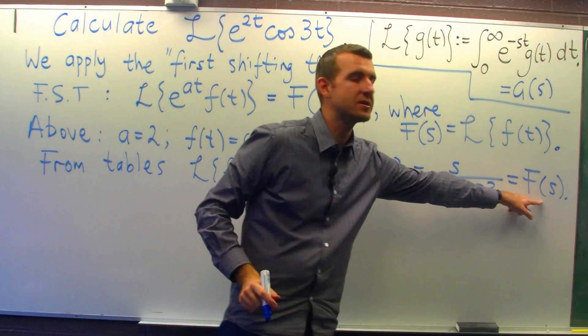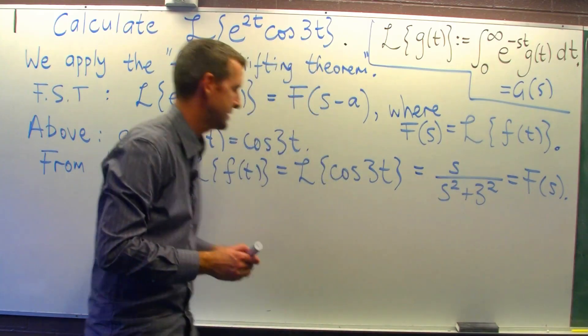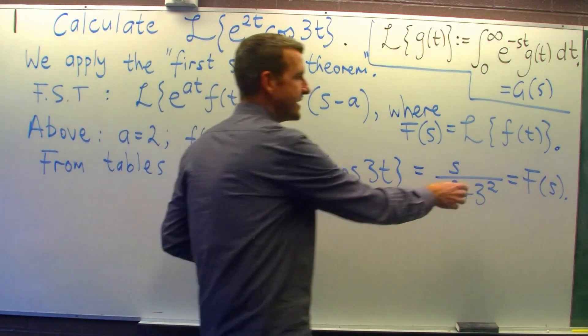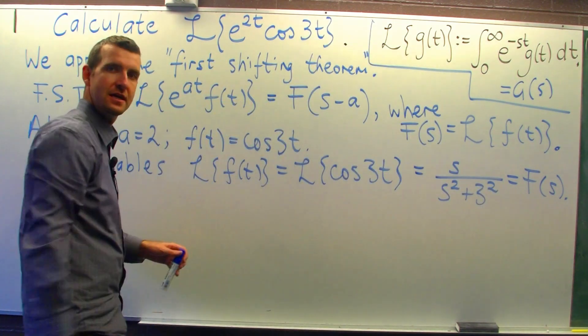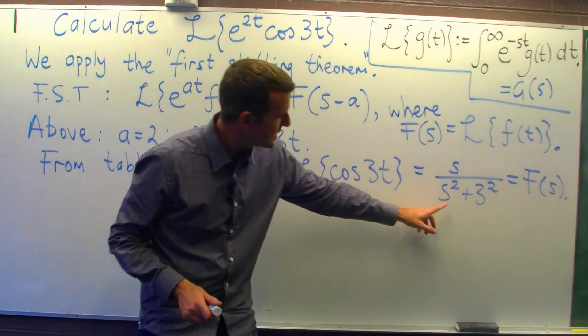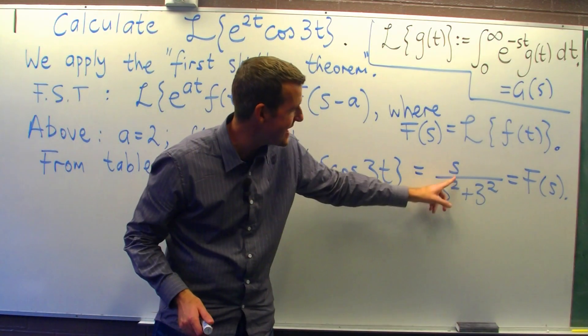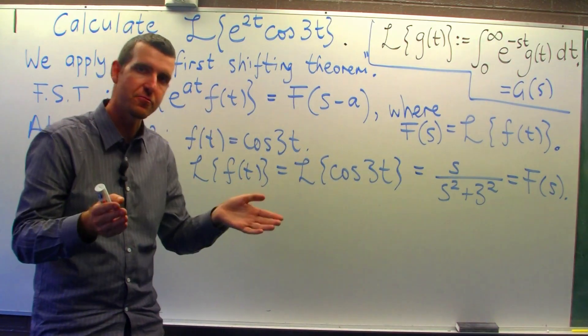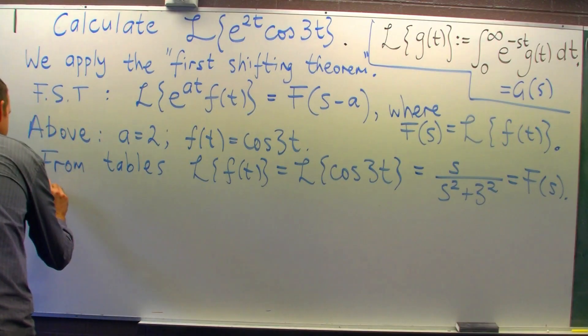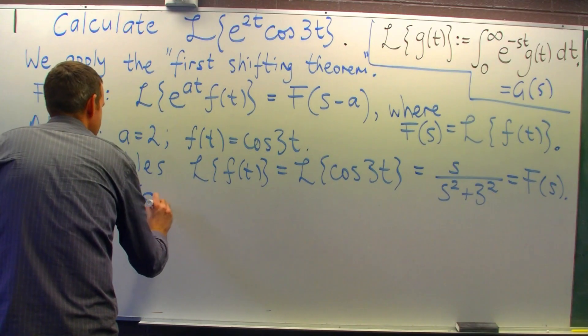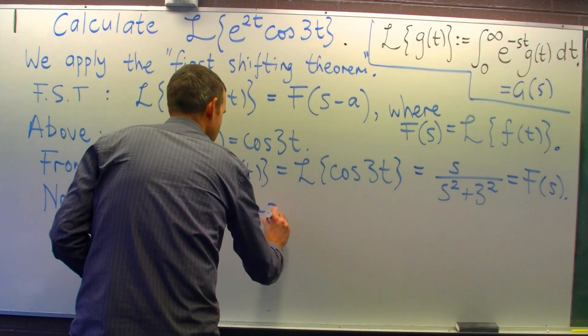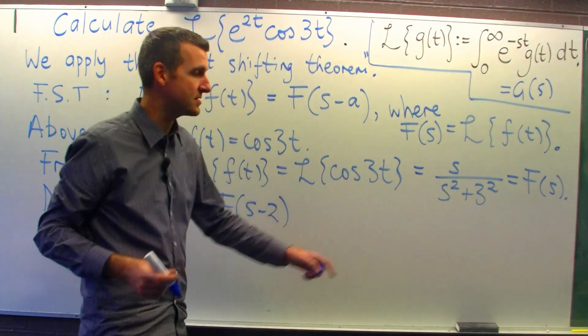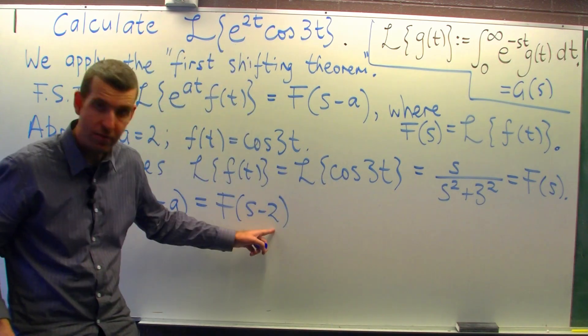Now we use this notation here because we want to emphasize that we have a function of s here. Alright, so if big F of s is this function, what is big F of s minus a? Well, all we do, we go to big F of s and replace s with s minus a, all in brackets. The brackets are important. Okay? So because a is 2, I go over here and replace s with s minus 2, all in brackets.